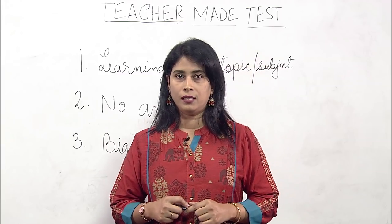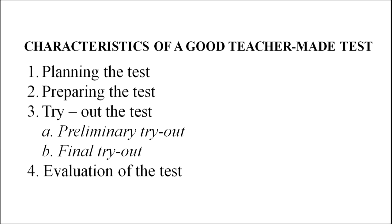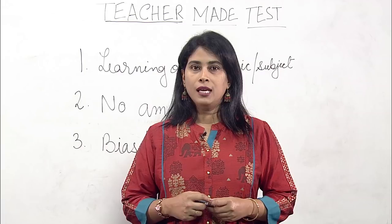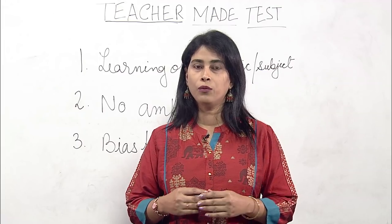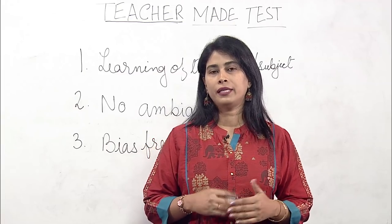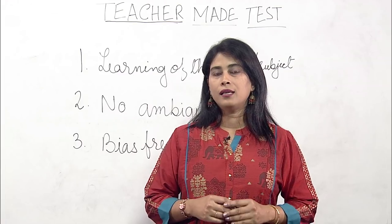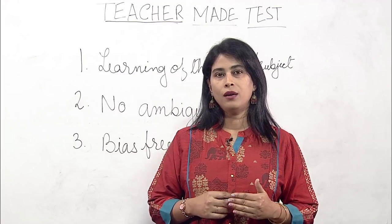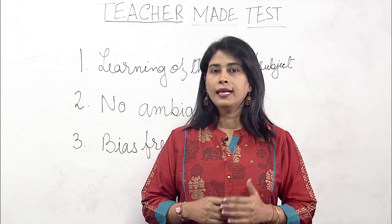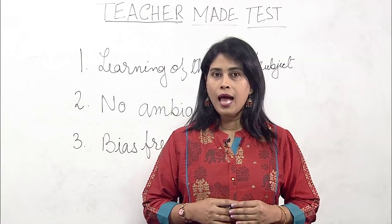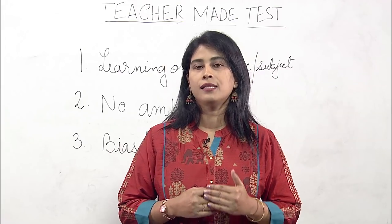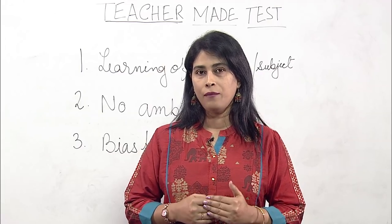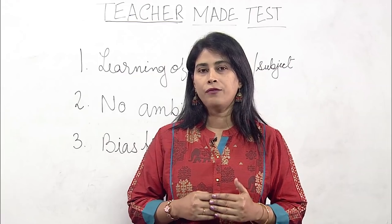The third characteristic is the tryout of the test, which has two trials: the preliminary tryout and the final tryout. The preliminary tryout helps the teacher know whether the test they are going to adopt will actually work on the students or not. The final tryout ultimately gives the final result to the teacher. Lastly is the evaluation of the test — the test prepared by the teacher has to be evaluated and re-evaluated, because the teacher must know whether the test will ultimately work on students and must always see the critical value of the test.